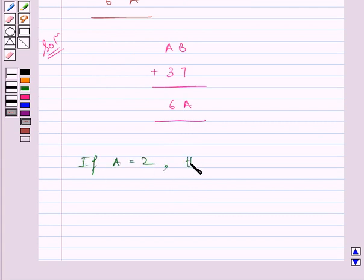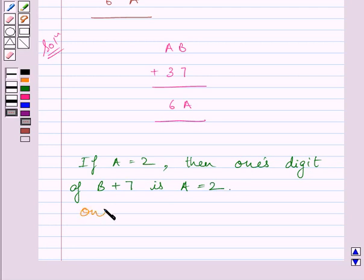then the one's digit of B plus 7 must equal A, which is 2. So the one's digit of B plus 7 equals 2